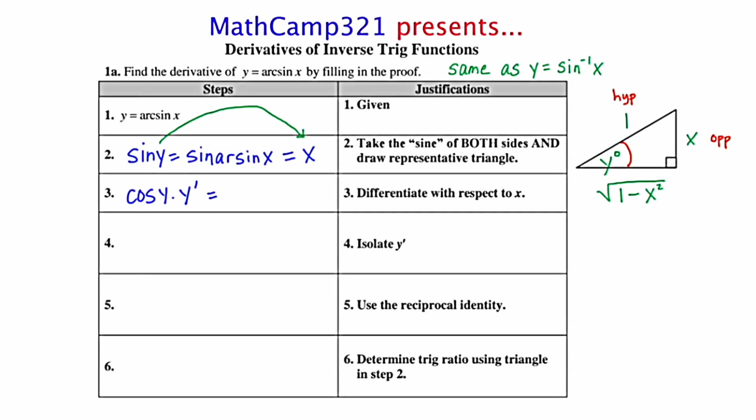In step four, we're told to isolate y prime. This will leave us with y prime equals 1 over cosine y. In step five, we're instructed to use the reciprocal identity. 1 over cosine is the same as secant y. Back from geometry, secant is the ratio of hypotenuse to adjacent. So, with that in mind, and interacting with the triangle that we drew off to the side, we're going to get that y prime equals 1 over the square root of 1 minus x squared.